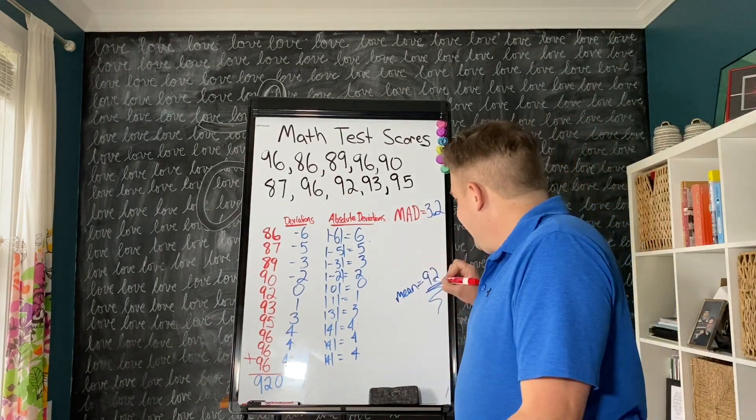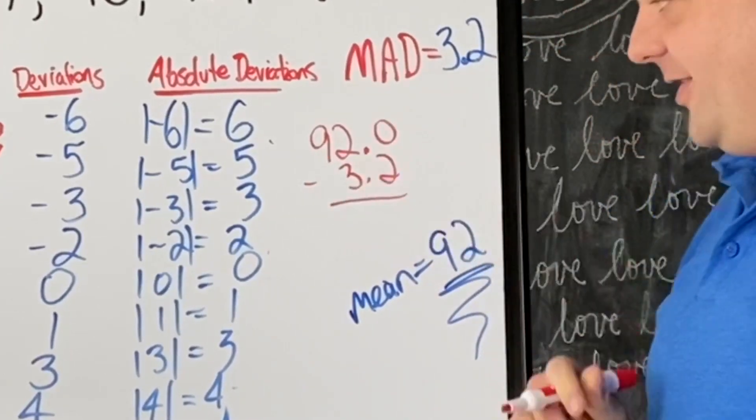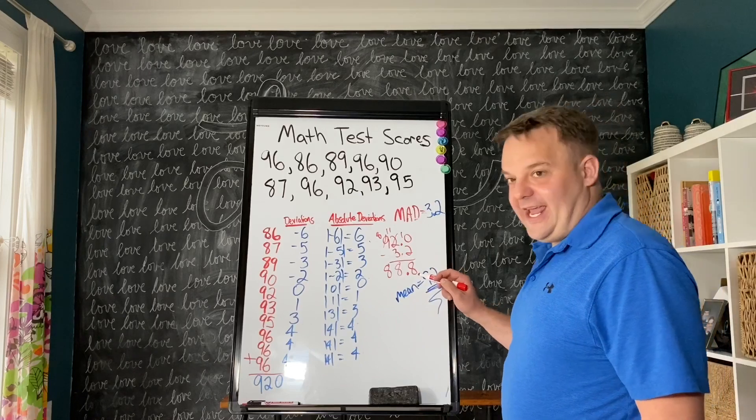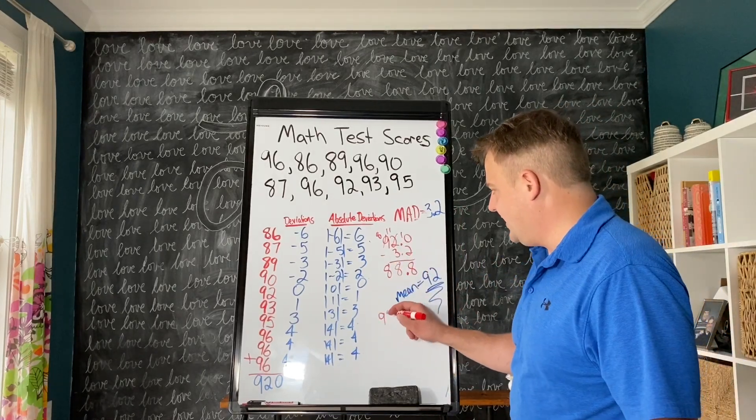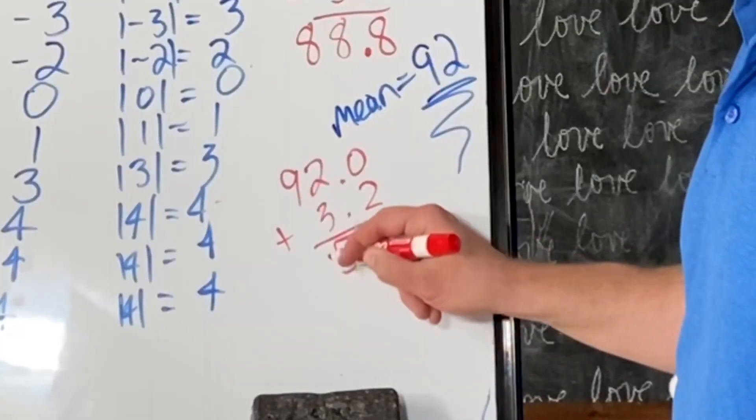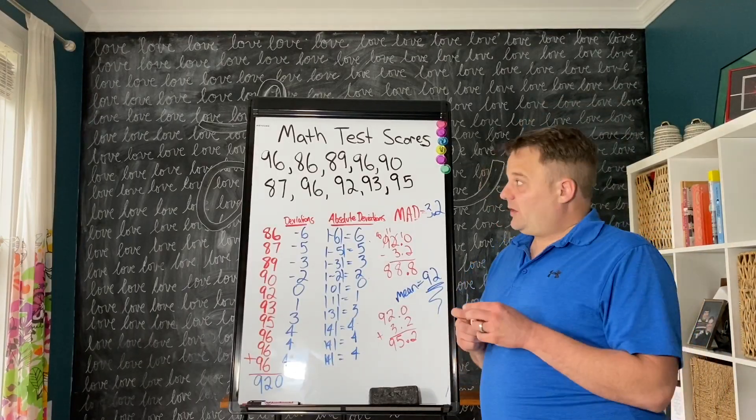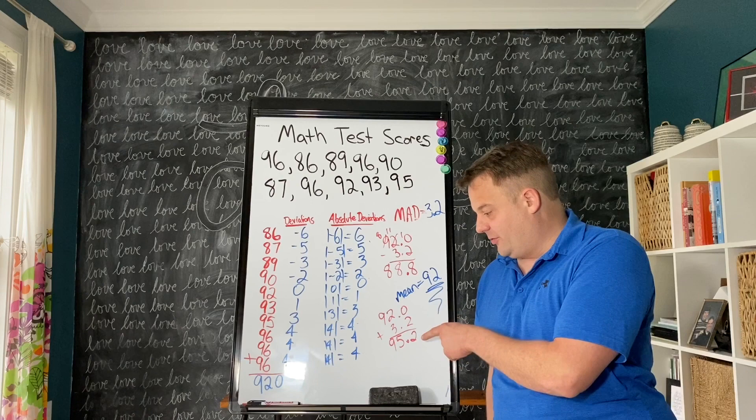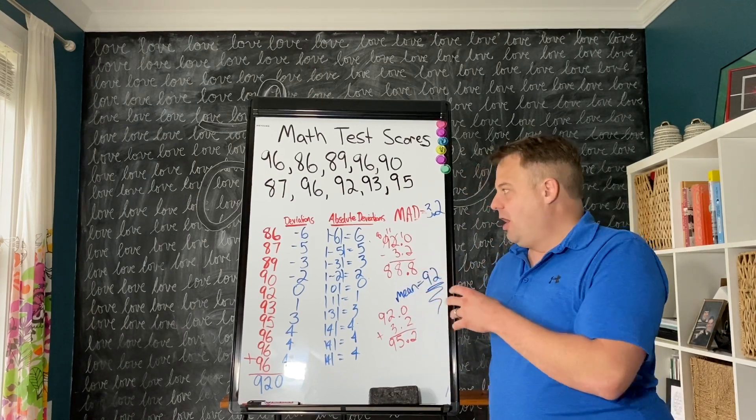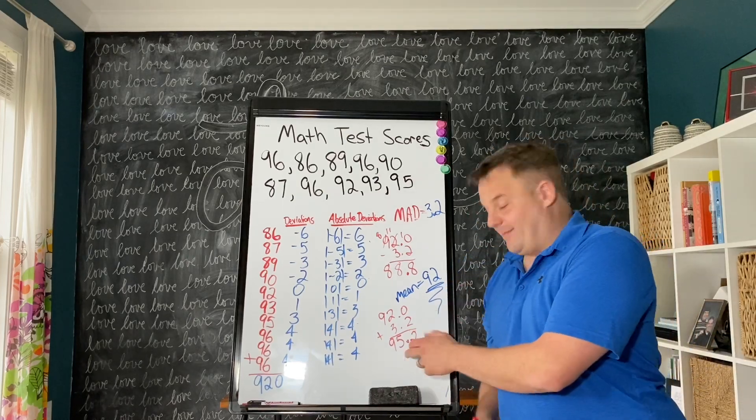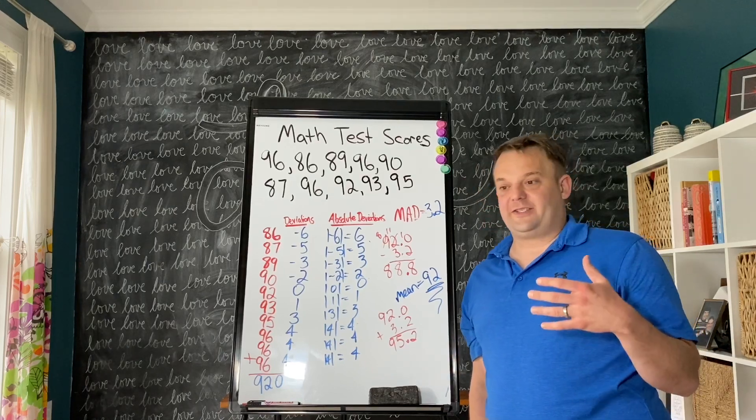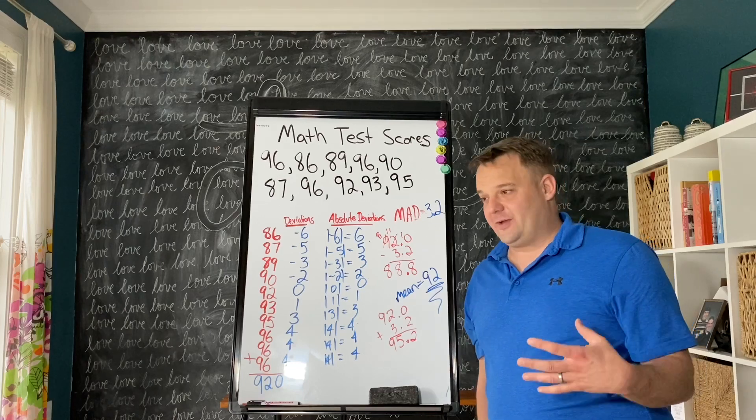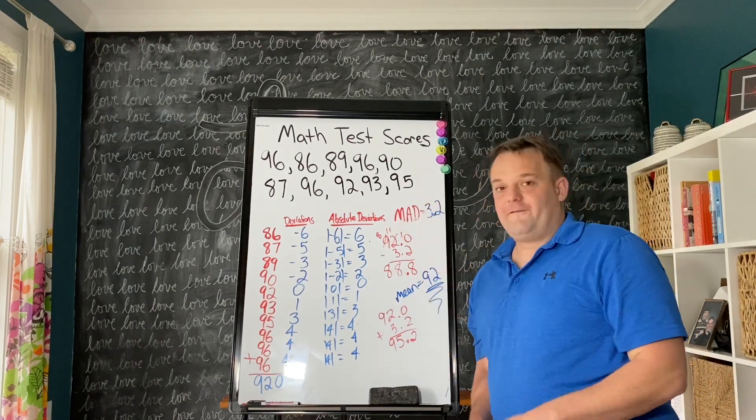Let's take grades for example. Are you above the mean or below the mean? And are you in the mean absolute deviation range? We take the mean, 92, and subtract 3.2. That's 88.8. Now we'll do 92 plus 3.2, and that's 95.2. So all the scores that fall above 88.8 and below 95.2 are acceptable within the mean absolute deviation. If you're above 95.2, maybe some gifted or enrichment work. If you fall below 88.8, maybe we'd give you some remedial work.